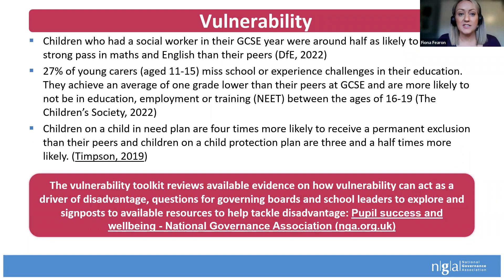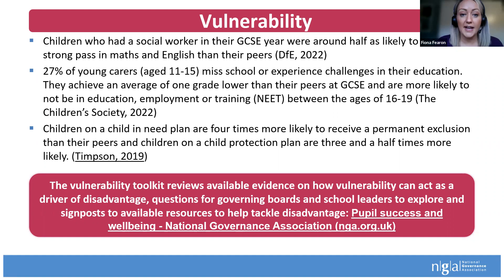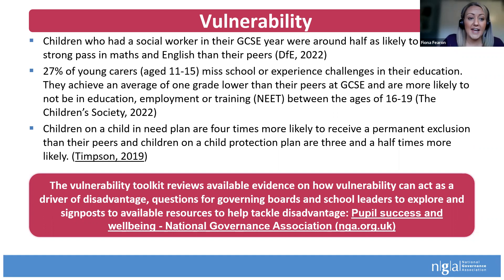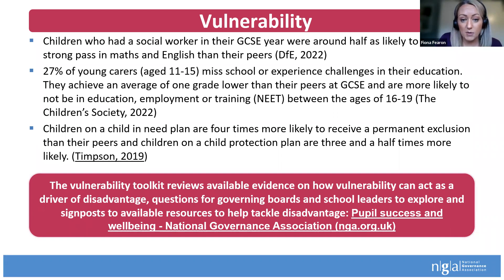Vulnerability is quite a nuanced term, and we recognise that. Children who had a social worker in their GCSE year were around half as likely to achieve a strong pass in maths and English than their peers. 27% of young carers aged 11 to 15 miss school or experience challenges in their education, achieving on average a one grade lower than their peers at GCSE. Children on a child in need plan are four times more likely to receive a permanent exclusion than their peers, and children on a child protection plan are three and a half times more likely.